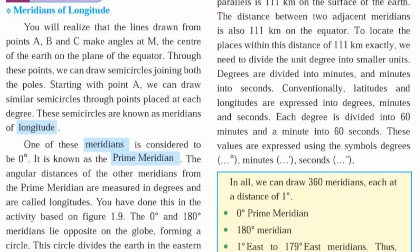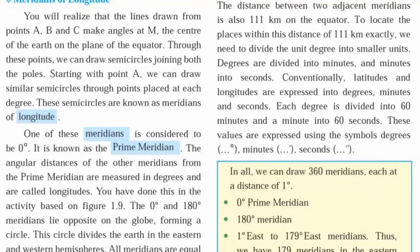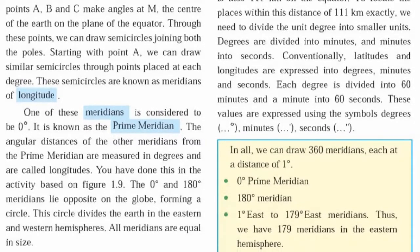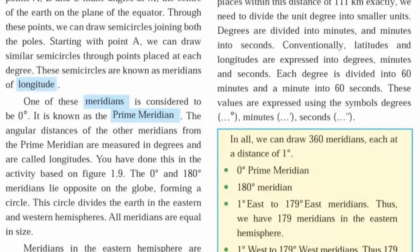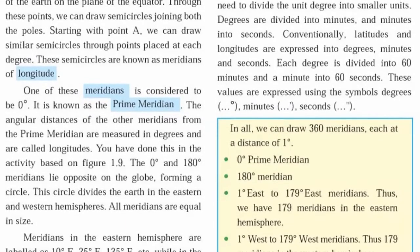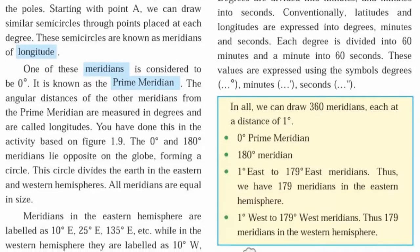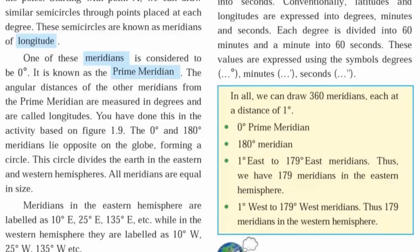Meridians of longitudes. The north-south semicircles created at some angular distance from the centre of the earth are called meridians of longitudes. Meridians of longitudes are imaginary vertical lines.